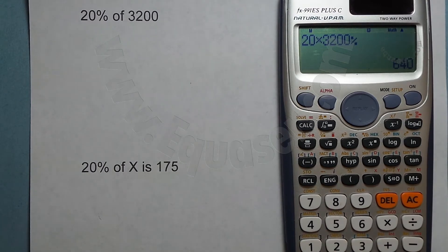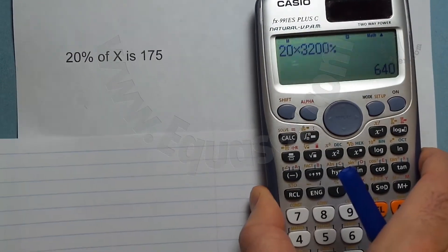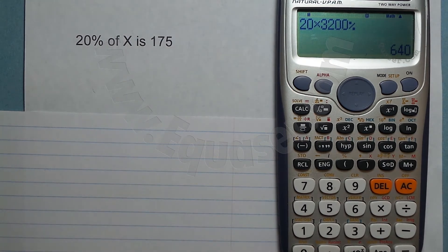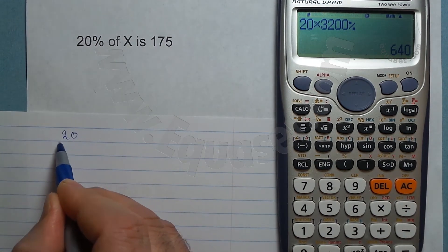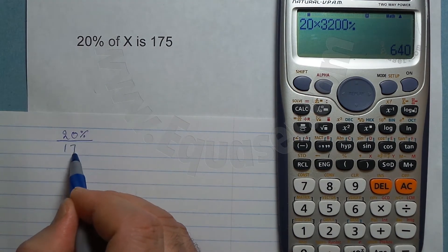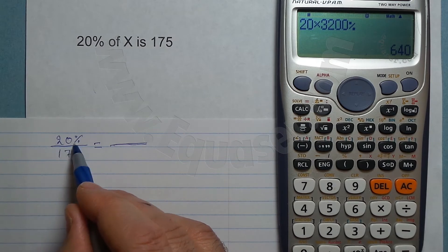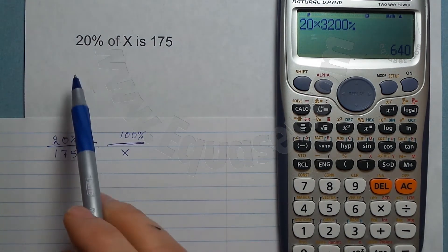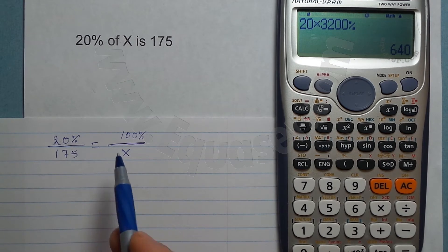For the second and third ways we have to do a little simple math. For the second way, if you are asked to find 20% of X and that equals 125 or 175, we set up a proportion. Since 20% of X is this much, we write it as: 20% over 175 equals 100 over X. We write the percent at the numerator and the full amount, which is 100, on the other side.